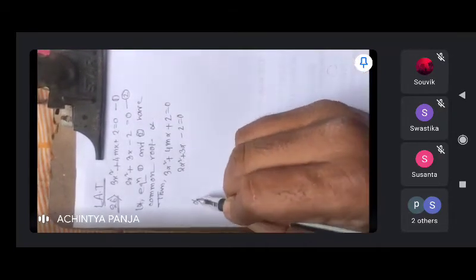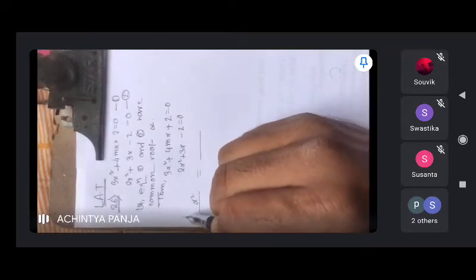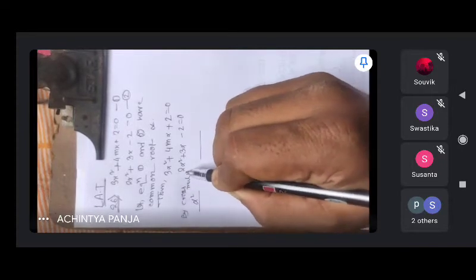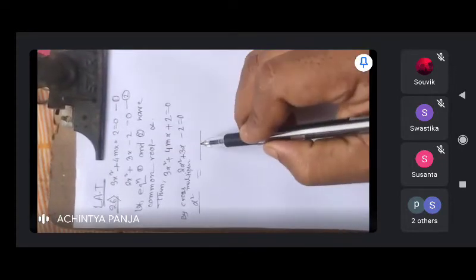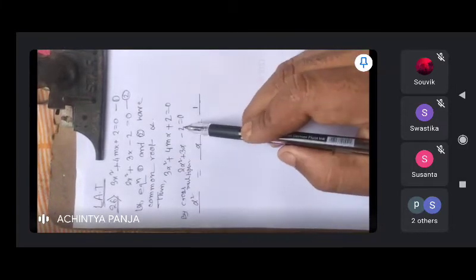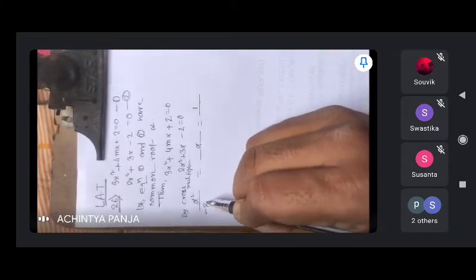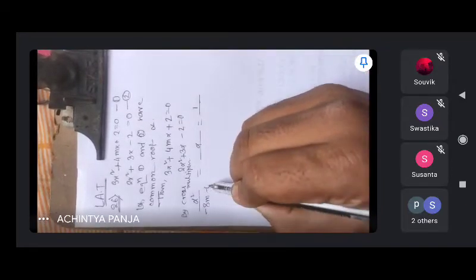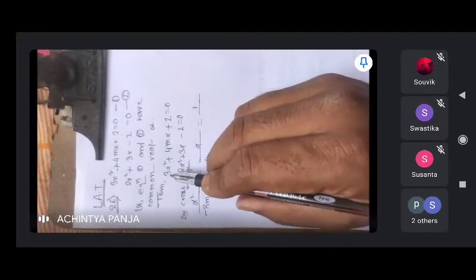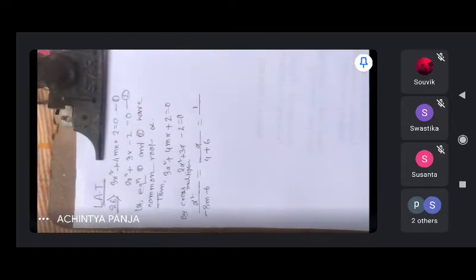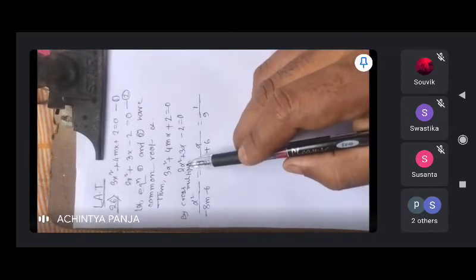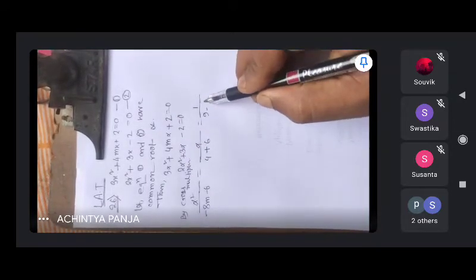By cross multiplication, alpha square by, alpha by, 1 by. 4m into minus 2 minus 8m, alpha square minus 6, alpha square plus 6, alpha square minus 2 equal to 0, alpha square minus 8m.